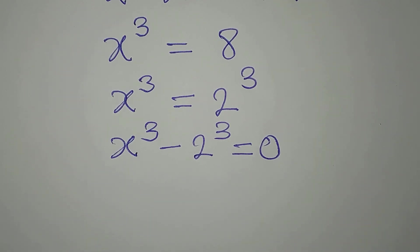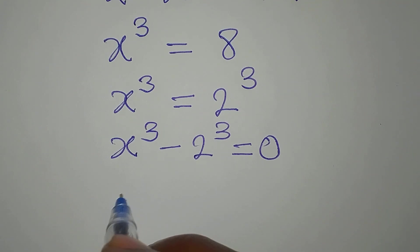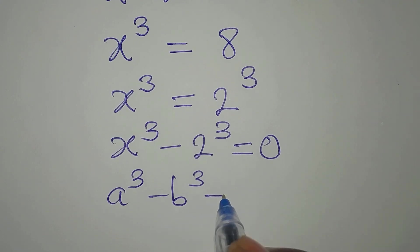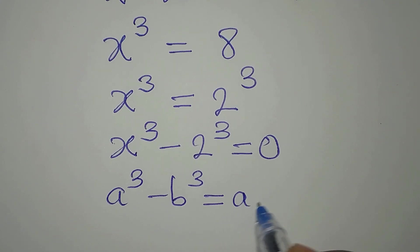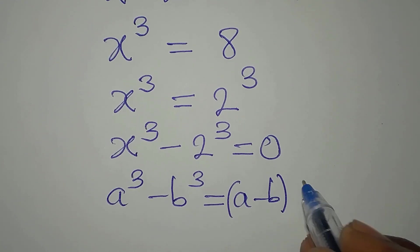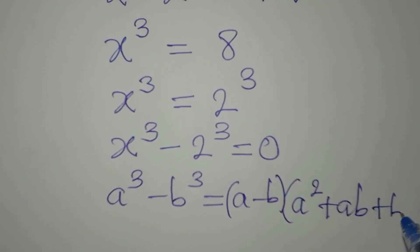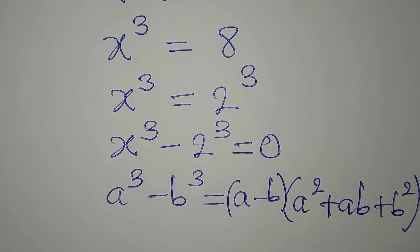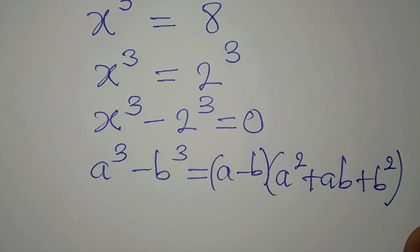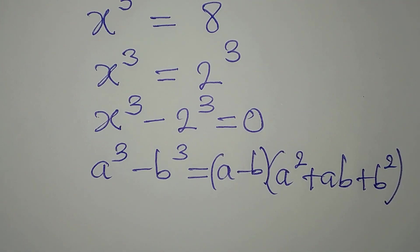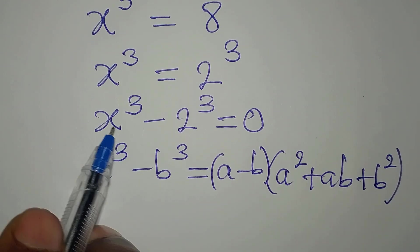Here we apply the difference of two cubes, just like we normally apply difference of two squares. If you have a to the power of 3 minus b to the power of 3, this equals a minus b, multiplied by a squared plus ab plus b squared. You need to know this formula to be able to solve this in detail.